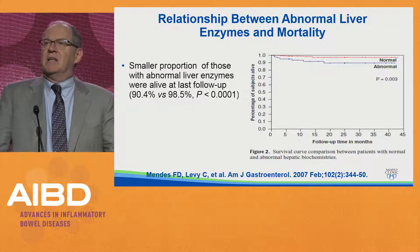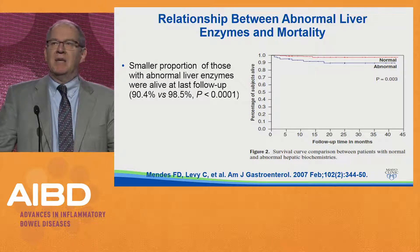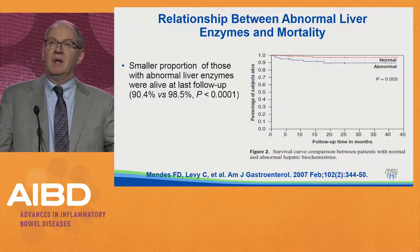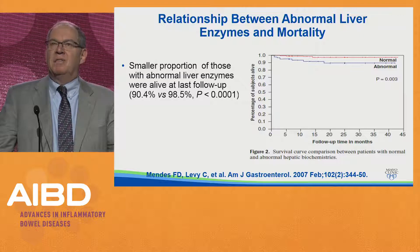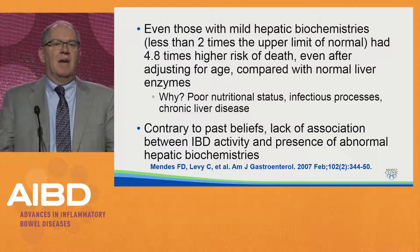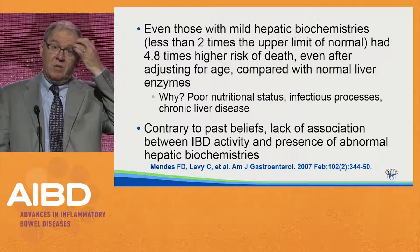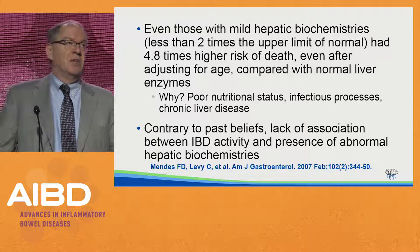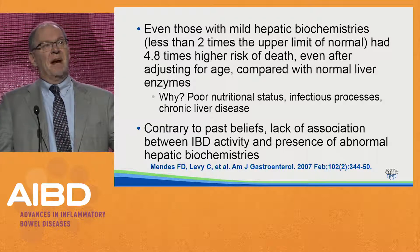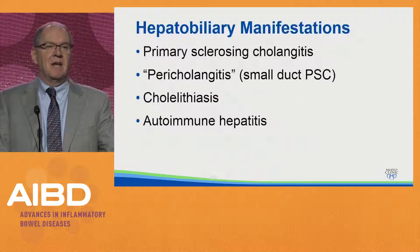The important reason to recognize this — rather than just blowing off the LFTs — is that people with abnormal LFTs have a significant impact on their survival. That's probably driven by the PSC patients within that cohort. We showed in that cross-sectional study that patients with abnormal LFTs had worse survival over the next four years. Even patients with mild hepatic biochemistries had a five times higher risk of mortality after adjusting for age. We also saw no relationship between LFT abnormalities and flares of IBD.